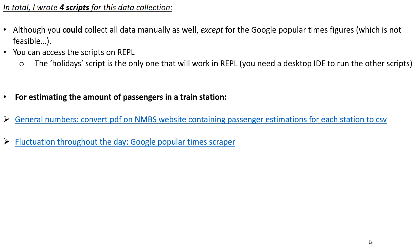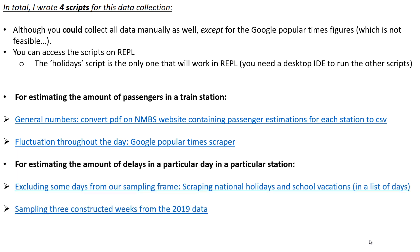So for step one — estimating the amount of passengers in a train station — we already have the general numbers. However, I converted the PDF from the NMBS website not through an online converter, but using a little Python script. Then I created a Google popular times scraper, which was very challenging but pretty cool to do. And then for step two — estimating the amount of delays in a particular day in a particular station — I first created a list of national holidays and school vacations, which is the script you can actually run in REPL. And then I sampled three constructed weeks from the 2019 data.